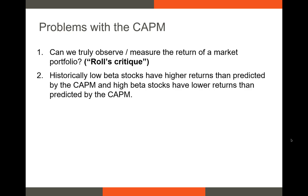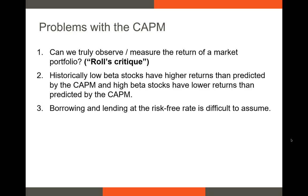Historically, low beta stocks have higher returns than predicted and high beta stocks have lower returns than predicted by the CAPM. This leads to the famous betting against beta anomaly — one of the four or five anomalies to be very familiar with. Also, not everyone can borrow at the risk-free rate. If you have very bad credit, you're not going to be able to borrow at close to the risk-free rate, even though you can always buy T-bills.